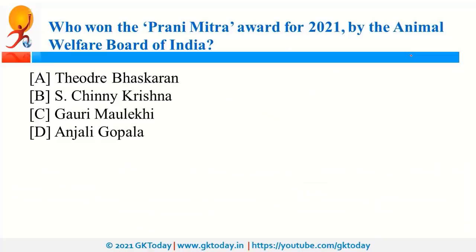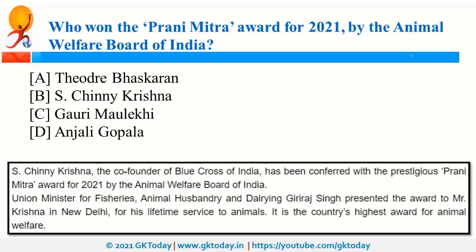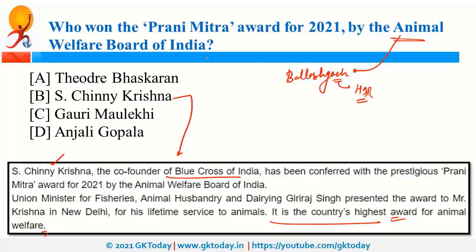S. Chinmay Krishna, founder of Blue Cross of India, won the Prani Mitra Award for 2021, given by the Animal Welfare Board of India — the country's highest award for animal welfare. The headquarters of the Animal Welfare Board is in Ballabgarh, Haryana. It is a statutory body under Section 4 of the Prevention of Cruelty to Animals Act of 1960.